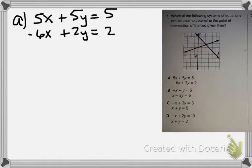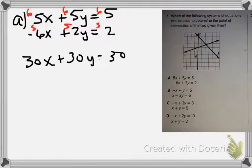I noticed that my bottom equation has a -6x, so it's already negative. I'm going to multiply everything by 6 at the top and everything by 5 on the bottom. So when I rewrite this, it'll be 30x + 30y = 30, and the bottom part would be -30x + 10y = 10.